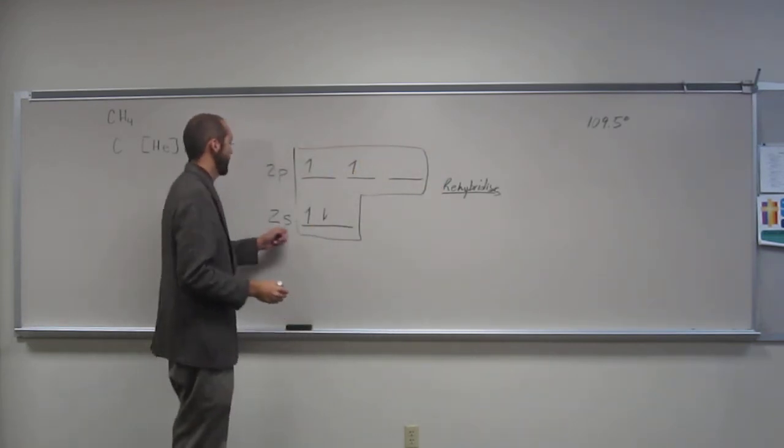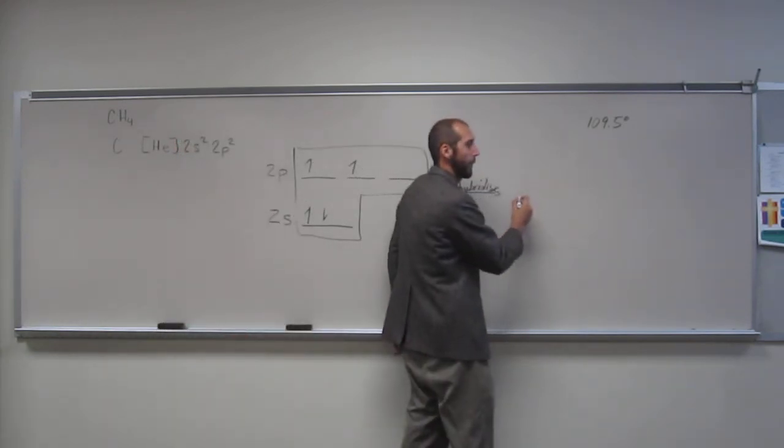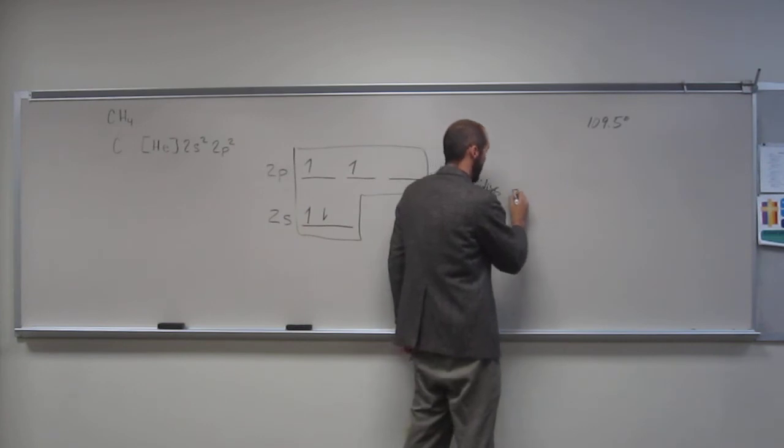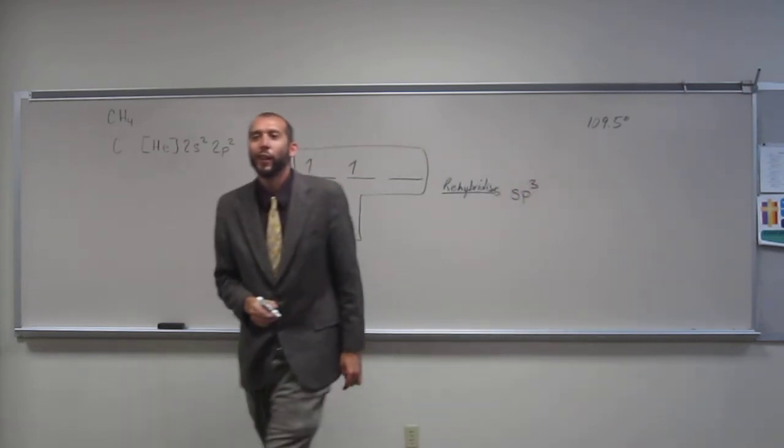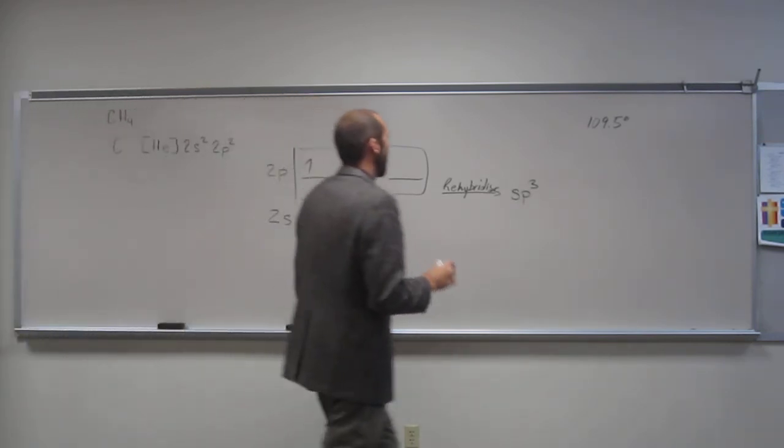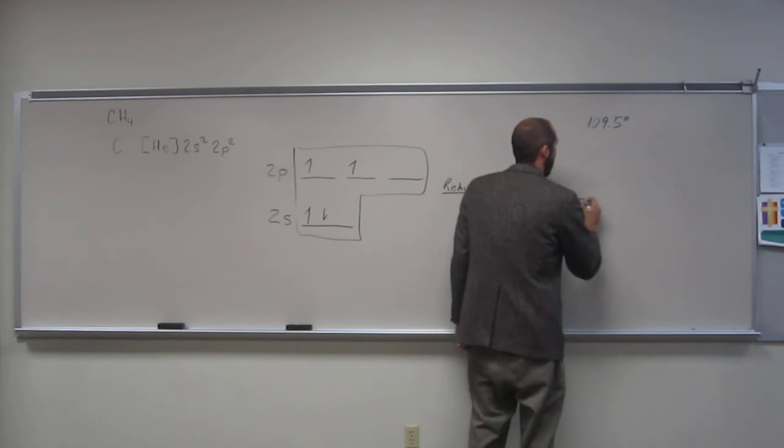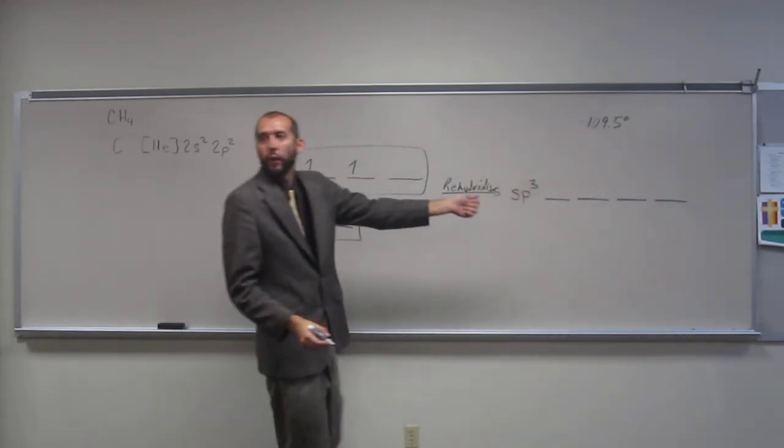So when we mix one s and three p's, what type of orbitals do we get out? sp3. And how many of them do we get? Four. Why? Because we put four in, so we get four out.